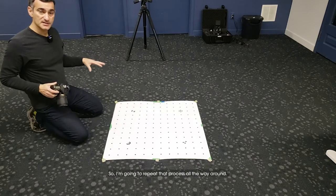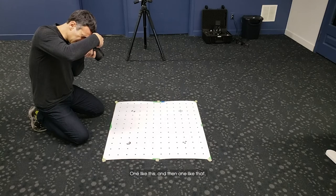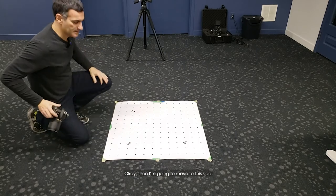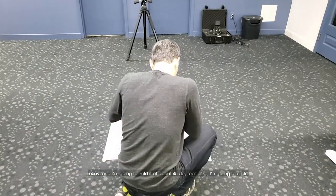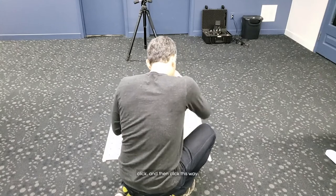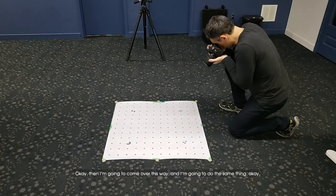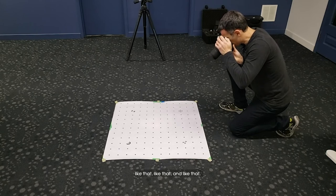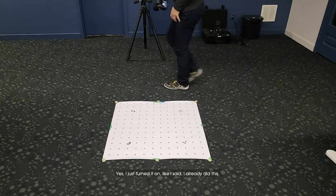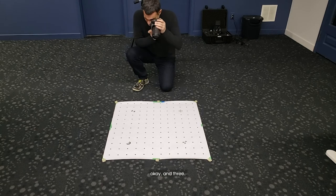I'm going to repeat that process all the way around. Like this, take a picture, then one like this, and then one like that. Then I'm going to move to this side and hold it at about 45 degrees, click, click, and then click this way. Then come over this way and do the same thing. Then come back this way one, two, and three.